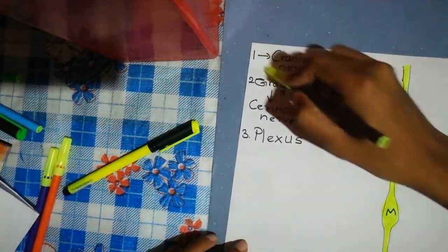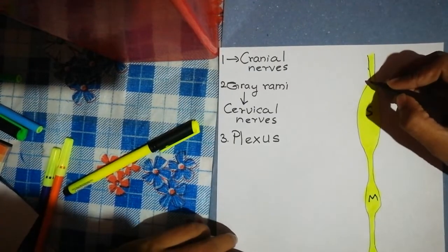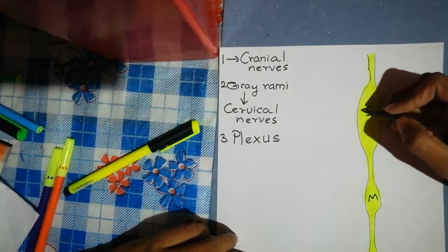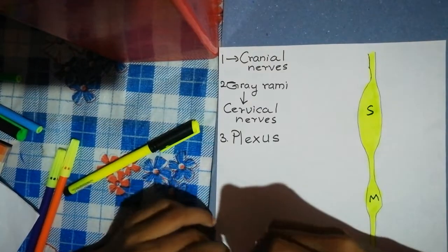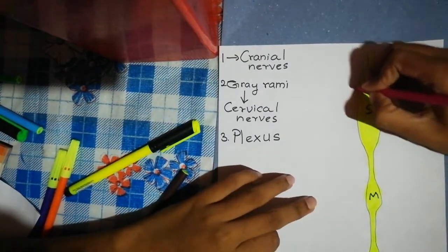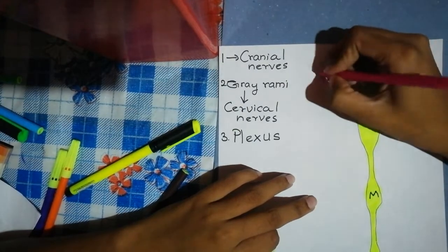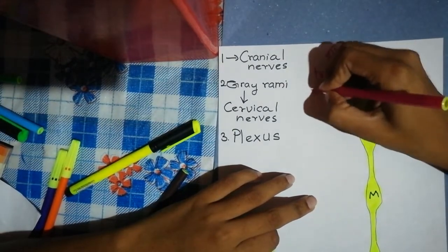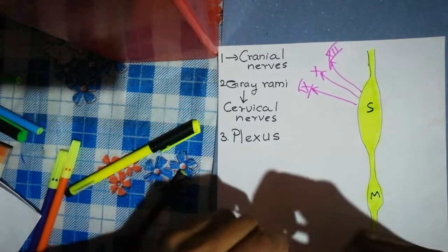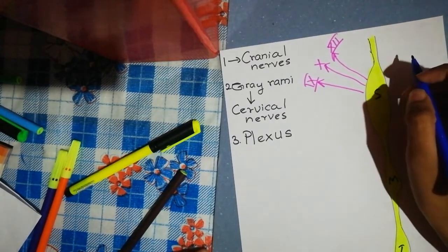The superior cervical ganglion is the only ganglion that gives branches to the cranial nerves. It provides branches to the 9th, 10th, and 12th cranial nerves. Now for the cervical nerves: gray rami communicans are given to the cervical ventral rami.